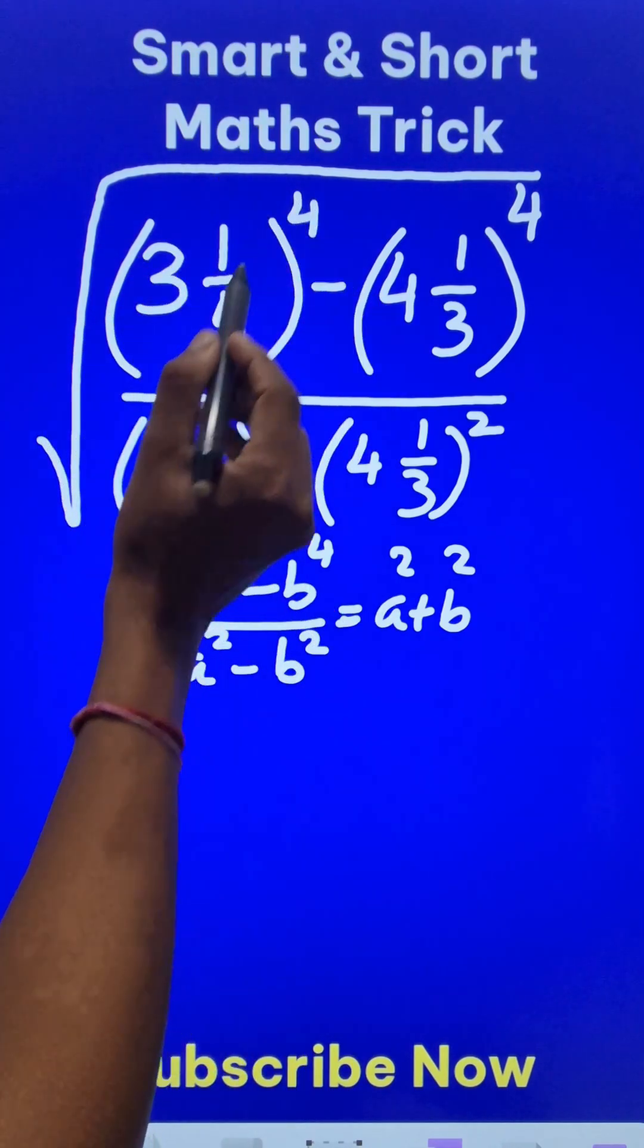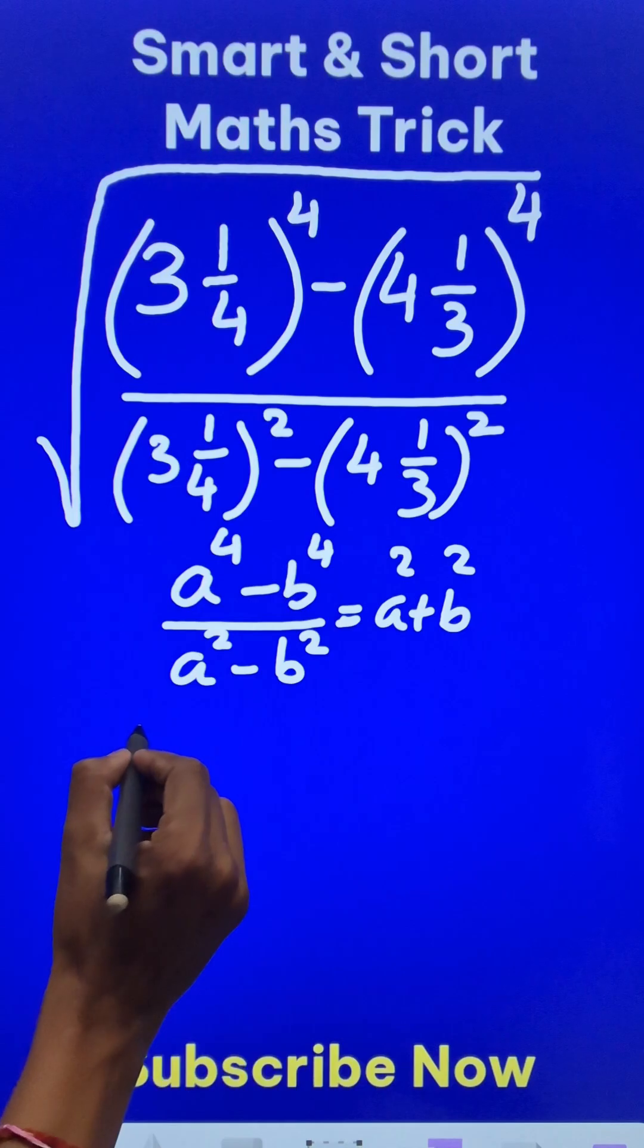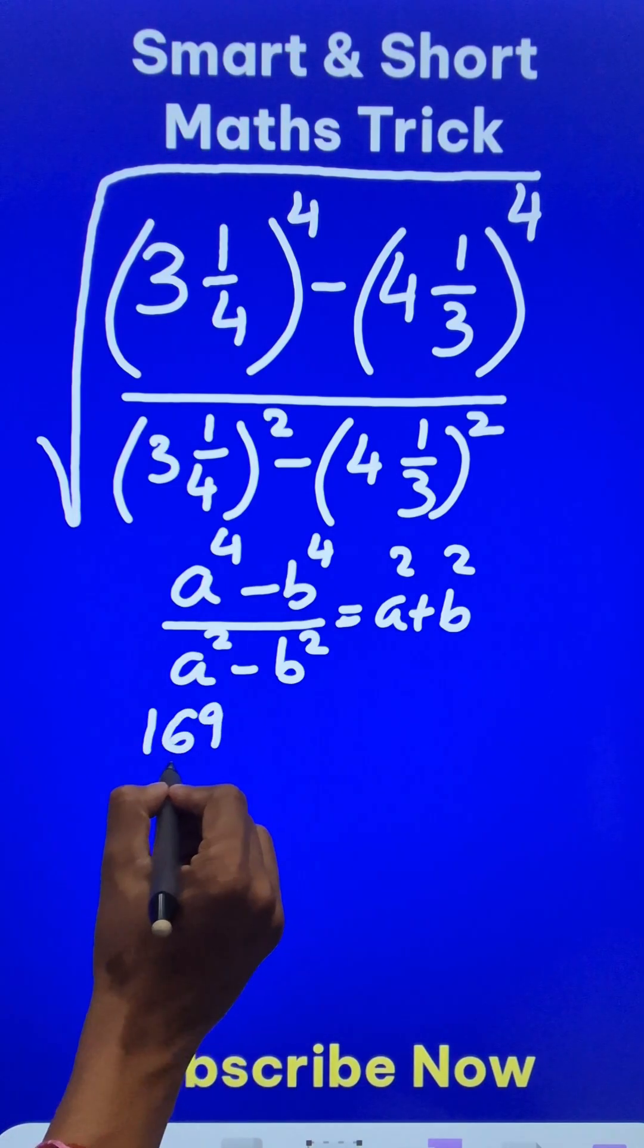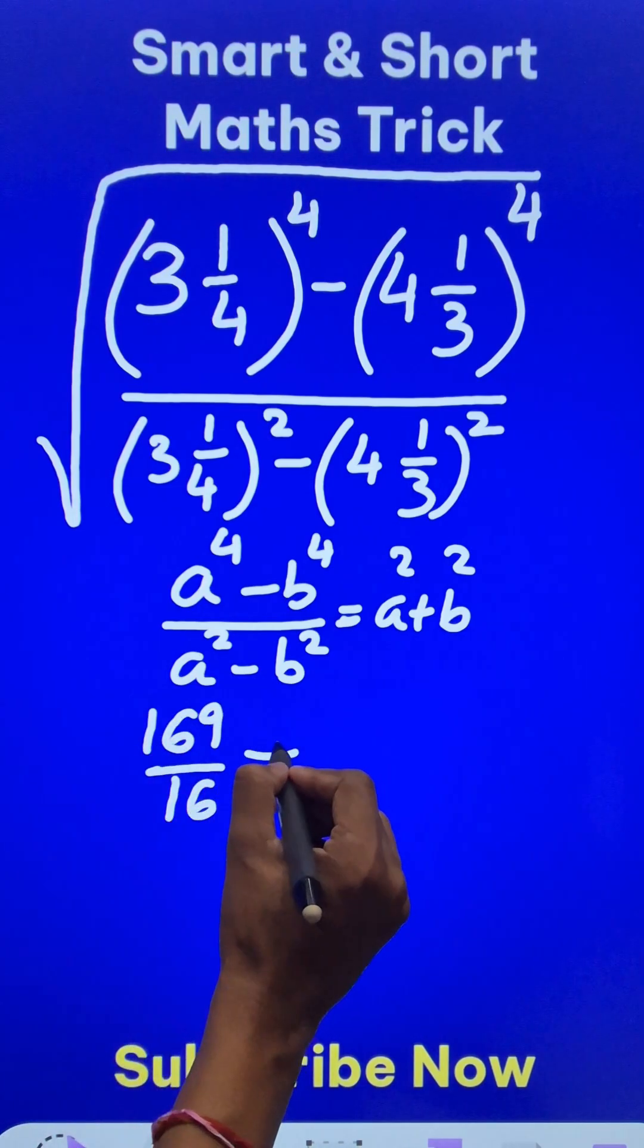3 1/4th square, or this is 13 by 4 square, which is 169 by 16, and then plus b square.